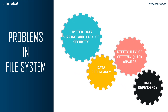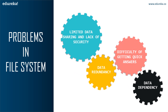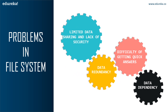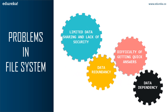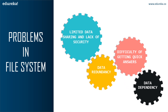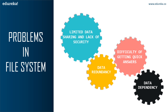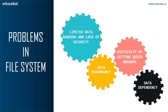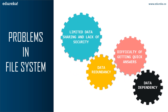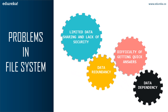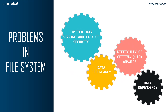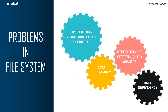The third problem is the difficulty of getting quick answers. This is one of the major problems in file system, because file system doesn't allow multiple users to access the same data at a given point of time. This means that multiple users at different work locations cannot access the same data simultaneously. This will limit the access to important data if multiple users search for the same data at a given point of time.